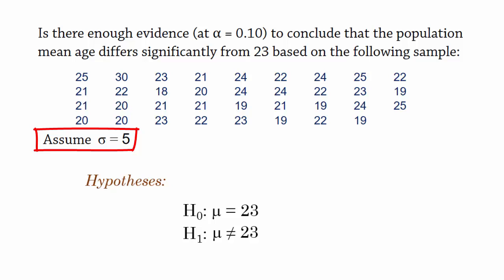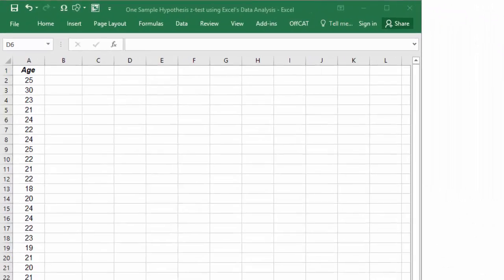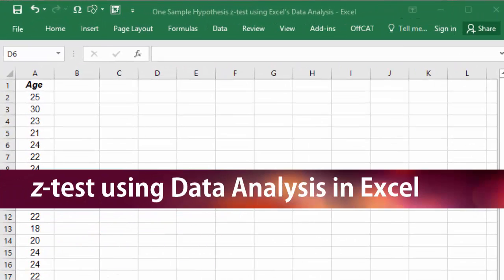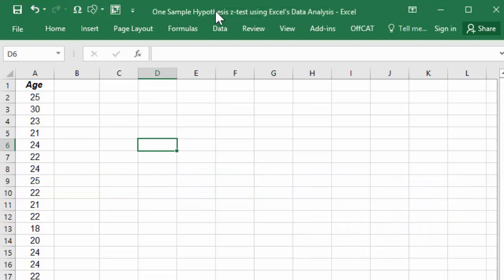Next, I'm going to launch Excel to generate the statistics for the test. Here in Excel, I'll be using the built-in data analysis command. Since data analysis only contains two sample Z test, we'll create a dummy second variable here and input at least one 0 in it.